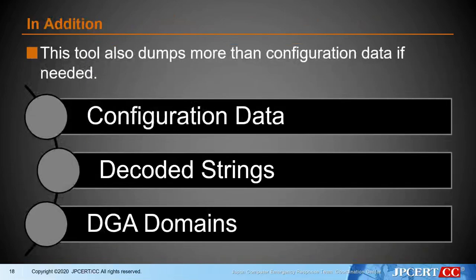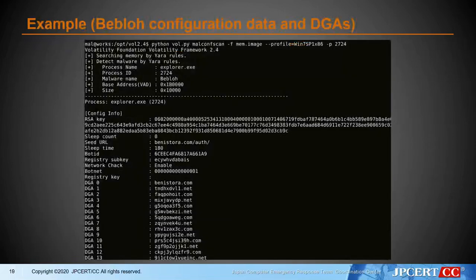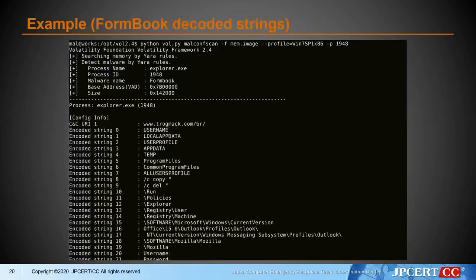In addition, this tool also dumps more than just configuration data if needed. In addition to configuration data, it dumps decoded strings and DGA domains. This is an example of MalconScan dumping Bebloh malware configuration — you can see RSA key, bot ID, and DGA domains. Here is another example of MalconScan dumping Emdivi malware configuration — you can see C2 server and decoded strings.